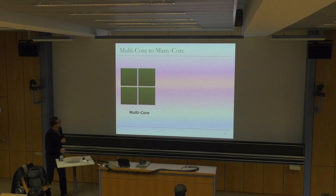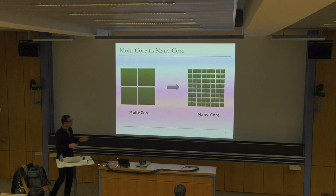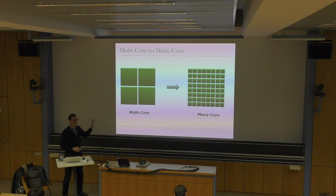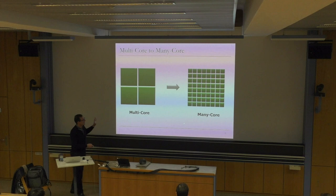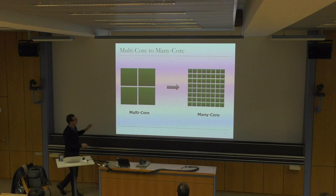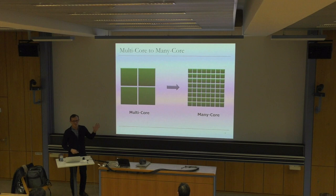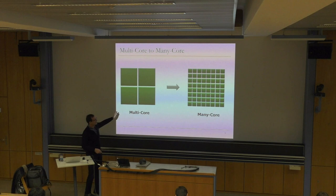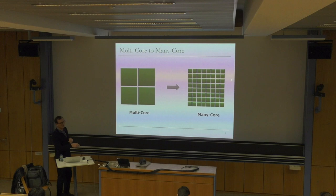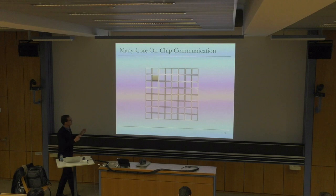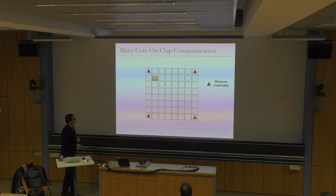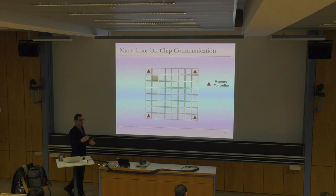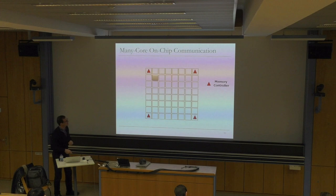Let me cover some work we've done with Intel looking at more distributed many-core systems with on-chip networks. In many-core systems, you have multiple cores with memory controllers on the side. You can't have hundreds of memory controllers because you're limited by off-chip channels. These systems also distribute the caches — a shared cache is partitioned across many cores, so a slice of the cache is at each node.